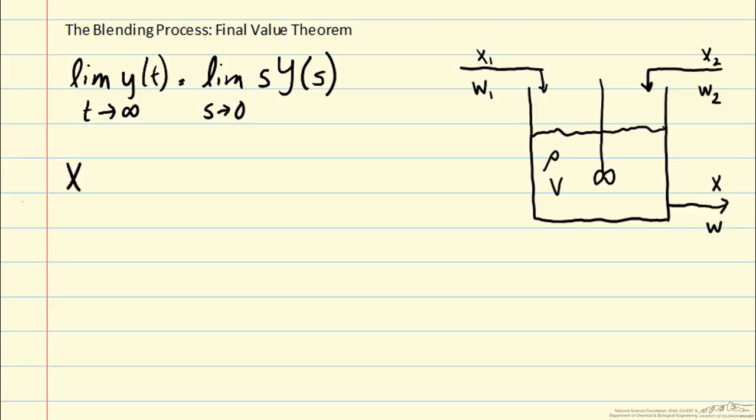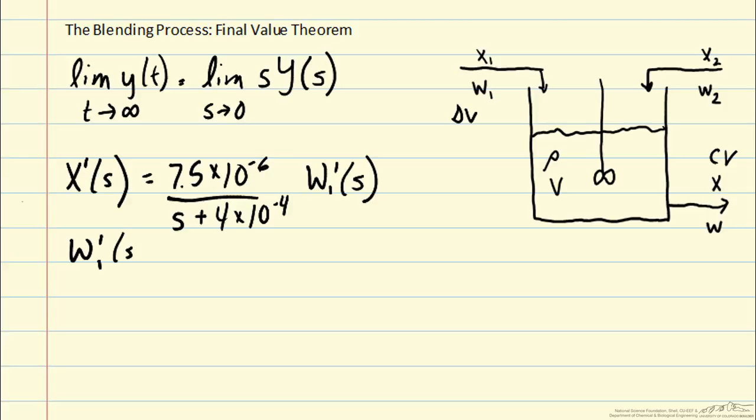So the Laplace transform version for x in deviation variables is 1.5 times 10 to the minus 6 over s plus 4 times 10 to the minus 4, and then we multiply that by w1 prime of s when we have a change in that disturbance variable. So let's consider the same step input w1 prime of s that we have considered in previous examples. A step input of height 0.1 and then the Laplace transform of a step is 1 over s.